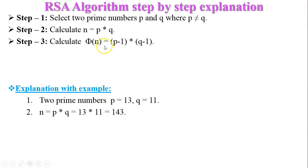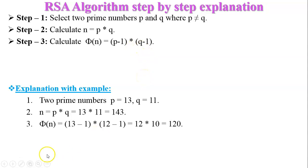Step number three: calculate φ(n) equal to (p minus 1) multiplied by (q minus 1). So φ(n) equals (13 minus 1) times (11 minus 1), which is 12 times 10, equal to 120.